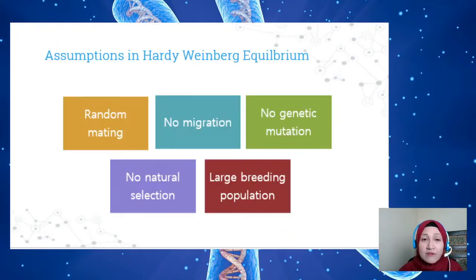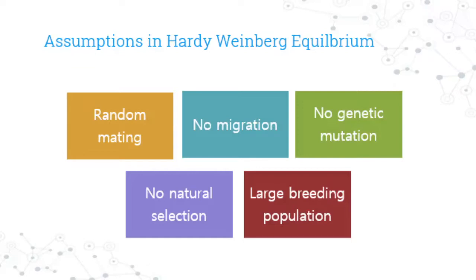These are the assumptions of Hardy-Weinberg equilibrium. First, only random mating occurs — individuals must pair by chance. Second, no migration into or out of the population, so no gene flow can occur. Third, no genetic mutations must occur so that new alleles do not enter the population. Fourth, no natural selection can occur so that certain alleles are not selected for or against. Fifth, the population must be large so that no genetic drift can cause allele frequencies to change.